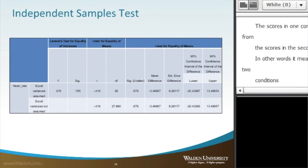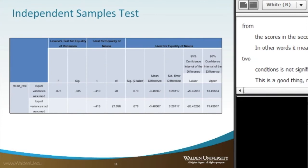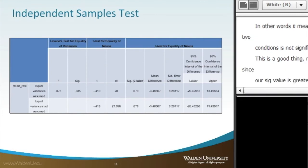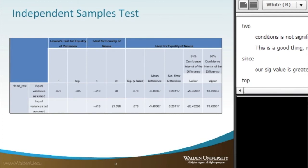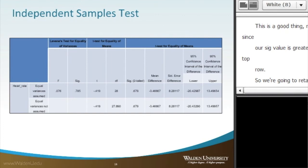This is a good thing. And in this example, since our SIG value is greater than .05, we read from the top row. So, we're going to retain the null hypothesis that the variances are not different. If the SIG value were less than .05, we would use equal variances not assumed, which would be the alternative hypothesis.